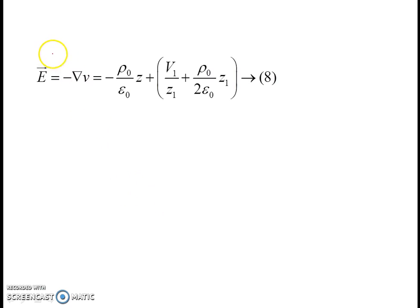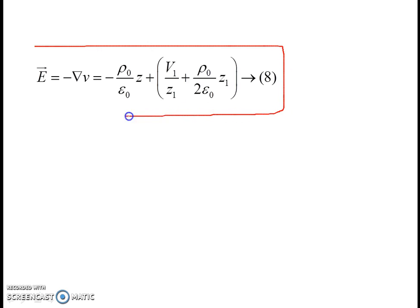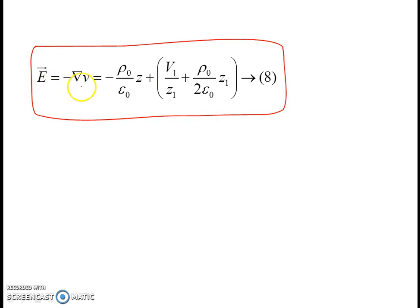To obtain the electric field between the two conductors, we take the negative gradient of the potential V. So E equals minus gradient of V, giving E equals minus rho naught over epsilon naught times z plus V1 over z1 plus rho naught over 2 epsilon naught times z1, in the z-direction.